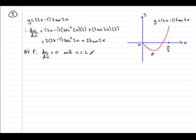So we'll just write that in by saying that at p, dy dx equals 0 and x equals k. Therefore, if we put dy dx equal to 0, we'll have 0 here. 0 equals, and substitute x equal to k into the right-hand side. We would have 2 lots of 2k minus 1 sec squared 2k plus 2 tan 2k.